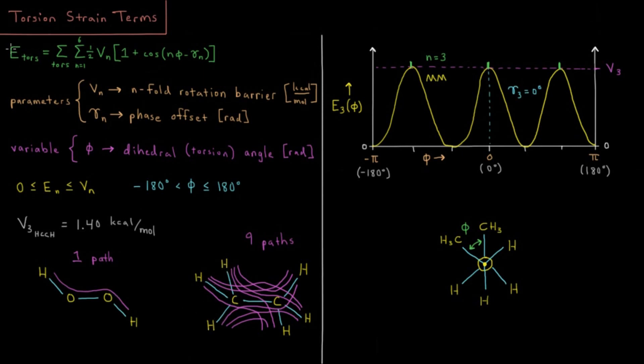But once we do, the energy of our torsion is going to be the sum over all of the torsions in the molecule. So one torsion here, nine torsions here in ethane, each distinct path from end to end here of four atoms.